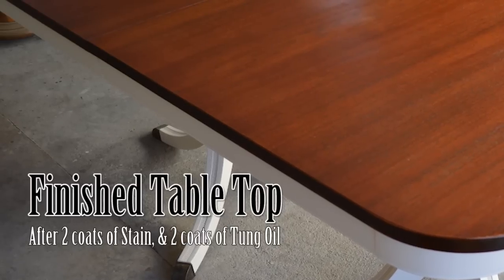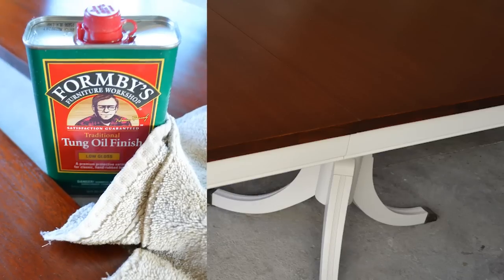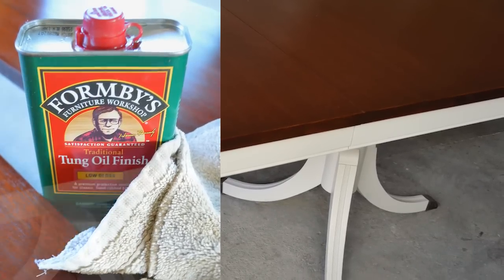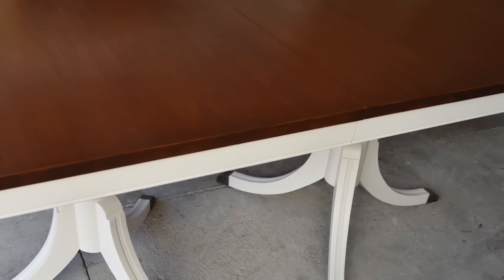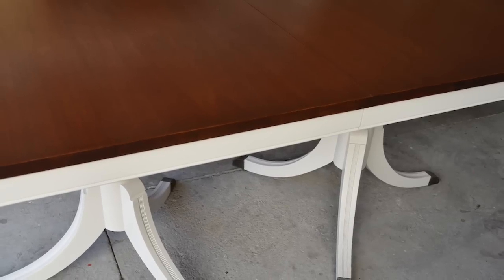The final step is to apply a protective finish. I like to use Formbys traditional tung oil finish. Put a small amount of tung oil finish on a soft, lint-free cloth and rub it into the wood. For best results, apply a thin coat.